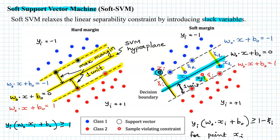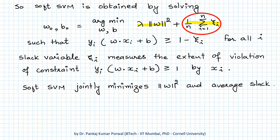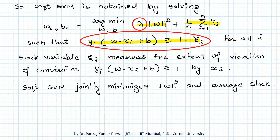With the introduction of slack variables, we also need to modify the objective function for soft SVM. This ensures the selected hyperplane allows some violation of the linear separability constraint, but prevents the extent of violation from becoming too large. We therefore include the average slack across all data points in the objective function, minimizing: λ‖w‖² + average slack, subject to the relaxed linear separability constraint.